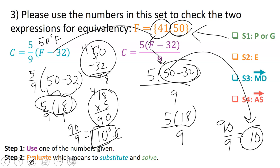We got the same number when we plugged in 41 for F earlier. We got 5 for the degrees Celsius. So we have proven that these two expressions are equivalent. Because we not only plugged in one number for the variable F, we actually checked two different numbers. And both times the expressions came out with the same answer.